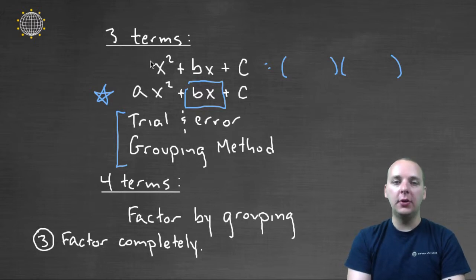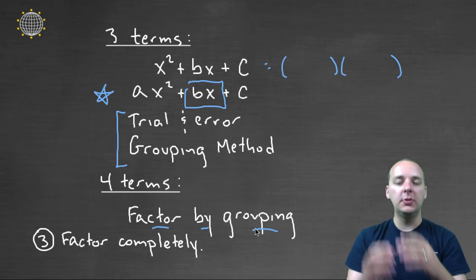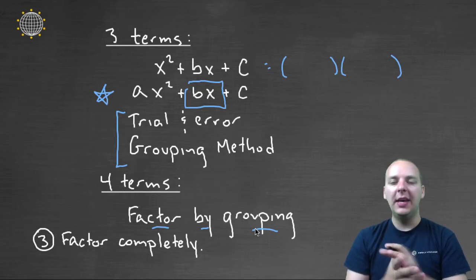So that's what you do if you have three terms. And if you see four terms, it's usually a dead giveaway that that's going to be factor by grouping. Factor by grouping works best with four terms, where you group the first two terms and you group the last two terms. And again, I'm not going to go through all the details, but that's what you do when you have four terms.